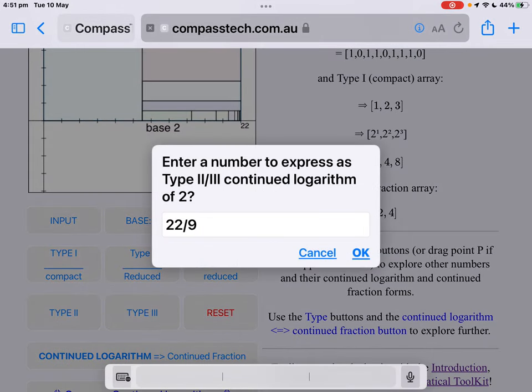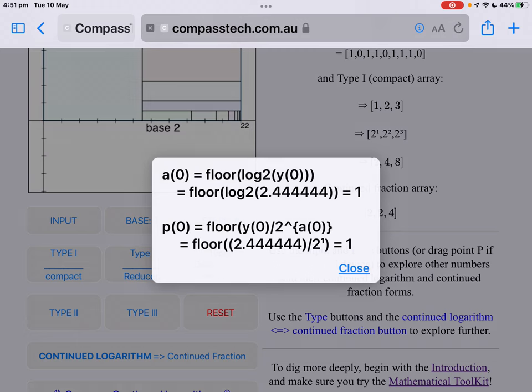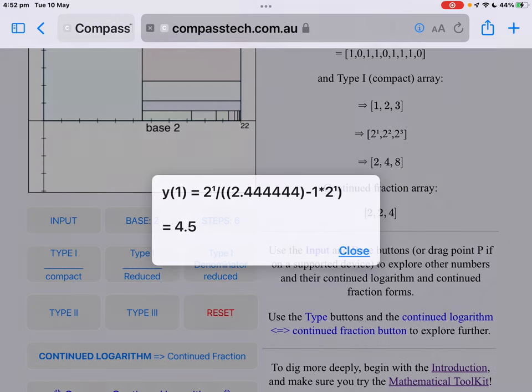So if we're going to convert the number 22 over 9 to type 2 or type 3, we're going to need two lists of numbers. The A values, which will be, as before, the powers of our base number. But another list, we'll call it a P list. Now the A list, the first A list, as expected, is the power of 2 just below the number you want. So the number is 2.44, 22 over 9. The power of 2 below that is 2 to the 1. And so our first A is a 1. The first P number, then, is our number, 22 over 9, divided by 2 to the power of the A we just found. In other words, divided by 2. And that gives us another 1. We take the floor of each of those, reducing it to the whole number part.